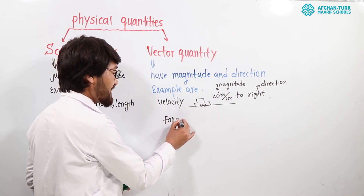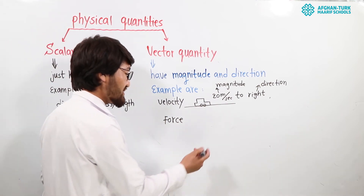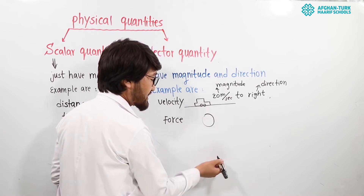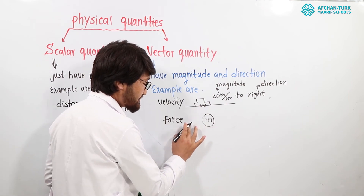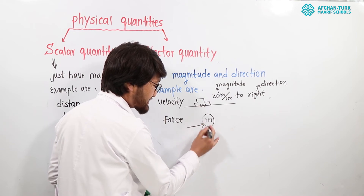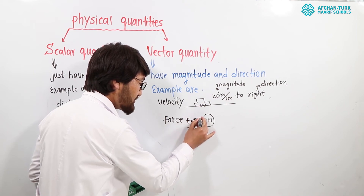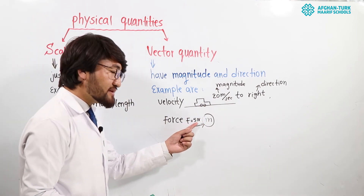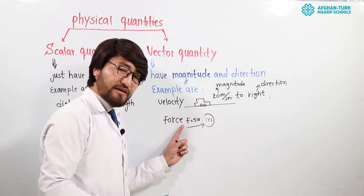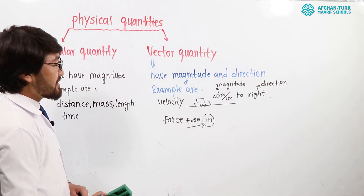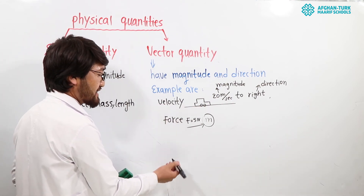Now let's look at another example. Force is also a vector quantity because it has magnitude and direction. Suppose there is an object with mass and we exert a force on it. That force is, for example, 5 newtons — that is the magnitude. And the direction is left to right.